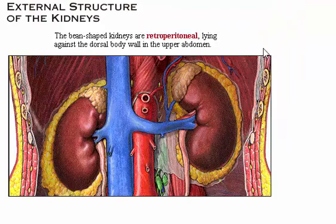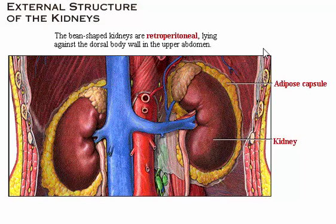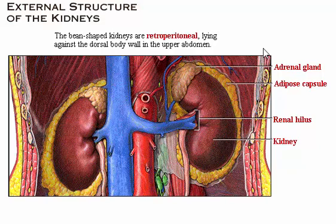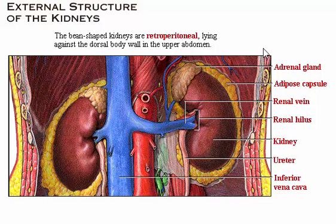Each bean-shaped kidney is embedded in a fatty adipose capsule. The kidneys are retroperitoneal, lying against the dorsal body wall in the upper abdomen. An adrenal gland, which is part of the endocrine system, lies on top of each kidney. Several structures enter or exit the concave surface of the kidney at the renal hilus, including the ureter and the renal vein, which drains into the inferior vena cava.